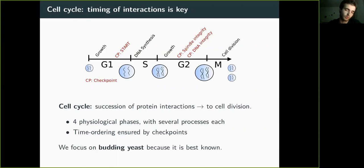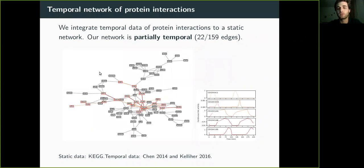So first we focus on budding yeast and we model it as a temporal network to take this temporal information into account. This is my network here and you can see that there's edges with shades of red. And for those I have temporal information, for example, I'm giving a few examples here.